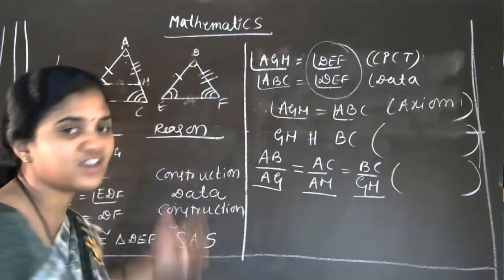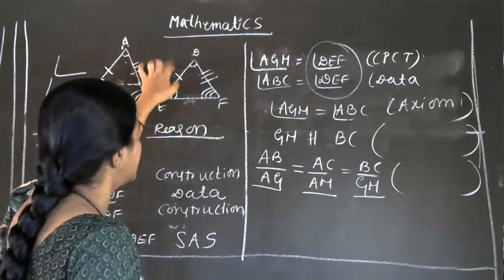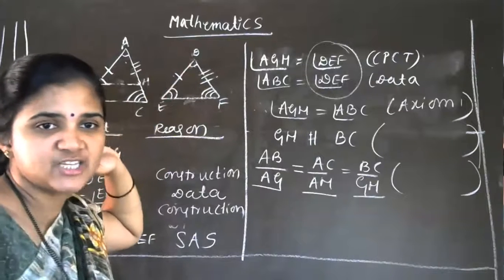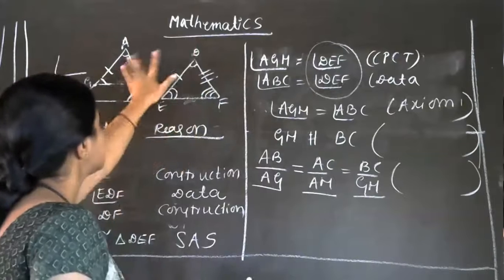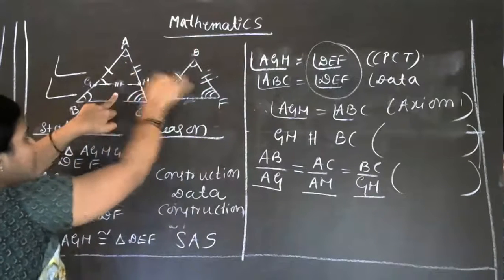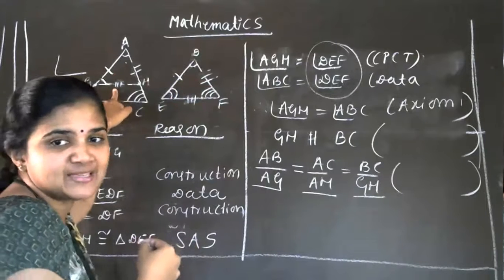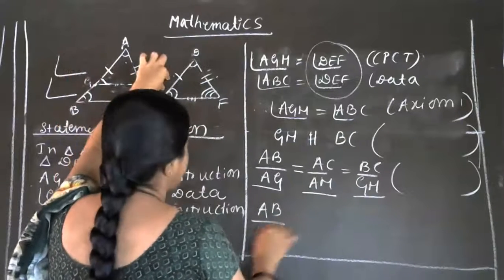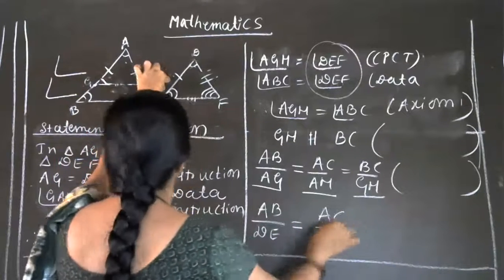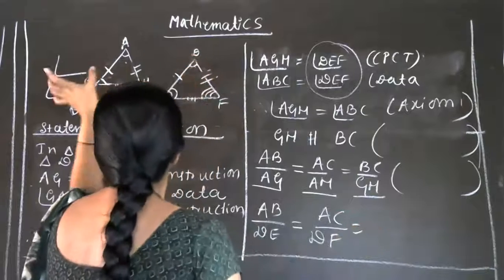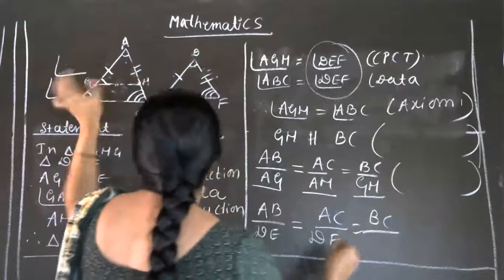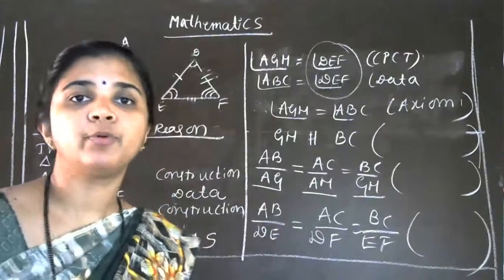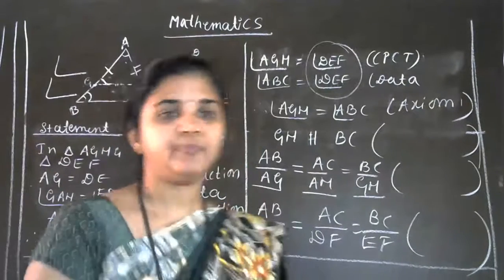The two triangles are congruent, so all three sides of triangle AGH are equal to three sides of triangle DEF. In construction, we took AG equal to DE and AH equal to DF — those two sides are equal. So this third side GH is also equal to EF. Now we write: AB divided by AG replaced as DE, which is equal to AC divided by AH replaced as DF, which is equal to BC divided by GH replaced as EF. Because the two triangles are congruent — hence proved. This is the proof of AA similarity criteria.